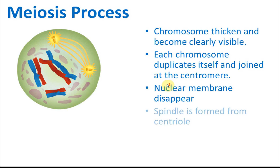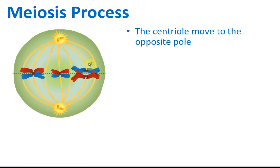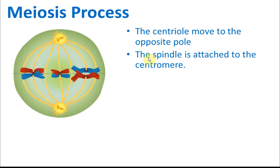Also like mitosis, the nuclear membrane disappears. Then the spindle is formed from the centriole — the centriole moves to the two opposite poles. The spindle then attaches to the centromere, which is the middle part of the chromosome.